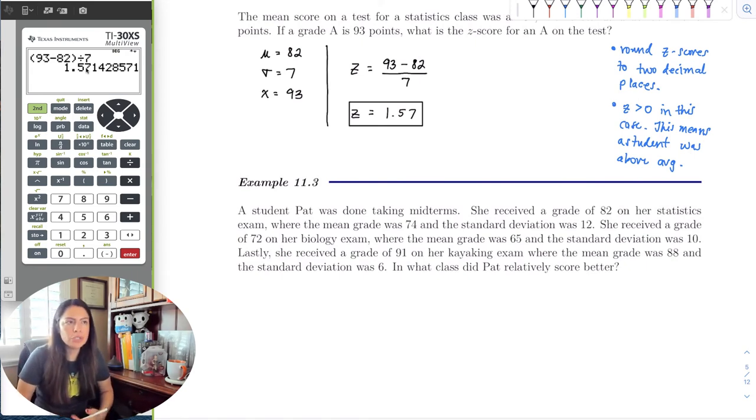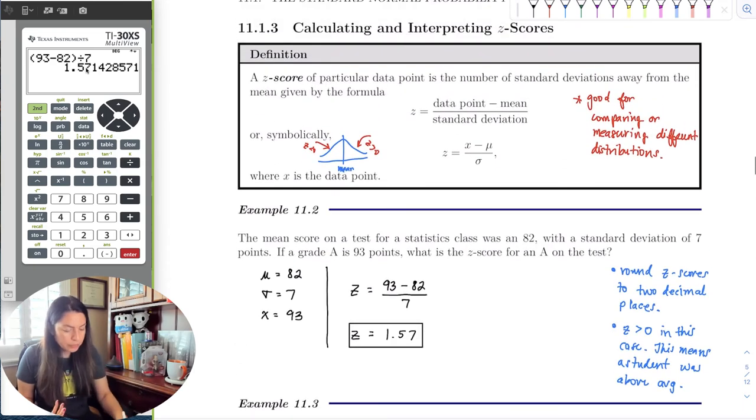Here's an example where we want to compare distributions. Pat took midterms - a statistics course, biology, and kayaking. For each class, they tell you the grade, the mean, and standard deviation. For statistics she received 82, mean was 74, standard deviation 12. For biology she received 72, mean was 65, standard deviation was 10. For kayaking she got 91, but the average was 88 and standard deviation 6. Notice she did really well in kayaking, but look at the average - it was already pretty high. Whereas on her bio exam, she scored the lowest out of the three, but the mean was only 65, so she did score above average. The only way we're going to truly find meaningful results and see which exam she did relatively better is to find the z-score for each so we can compare.